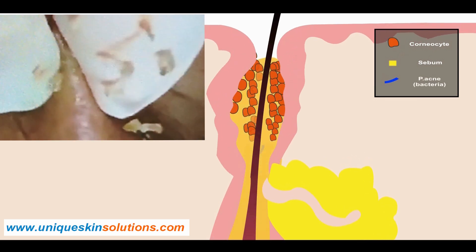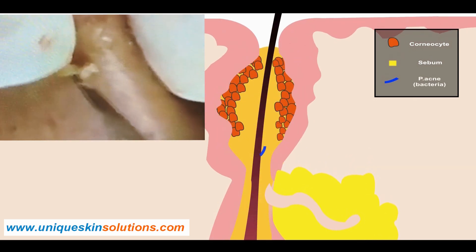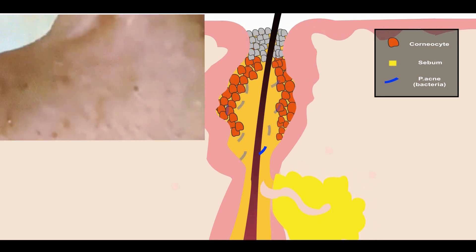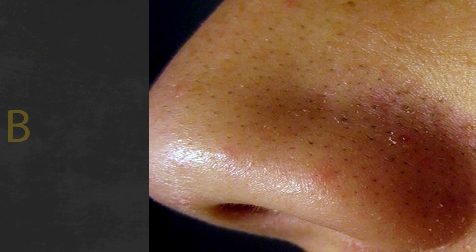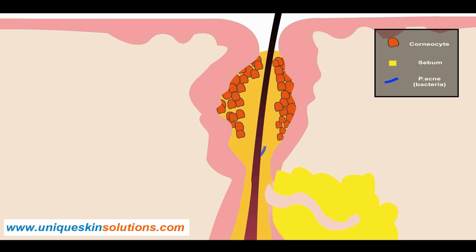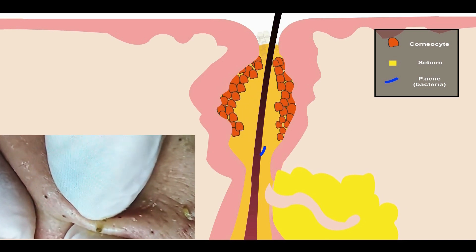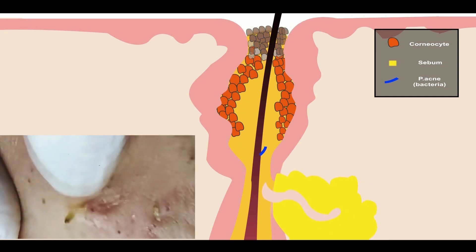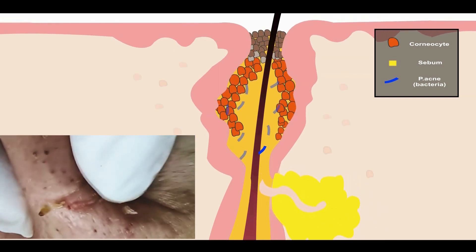Comedones can either be whiteheads or blackheads. Whiteheads, or closed comedones, present as skin-colored small bumps consisting of dead skin cells, keratin, and sebum. Whiteheads are closed off from air and not exposed to the outer surface. Blackheads, or open comedones, present as black-colored small bumps also consisting of dead skin cells, keratin, and sebum. They are open to air, and their dark color results from oxidized lipids and melanin — not from dirt or poor hygiene.